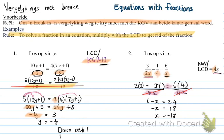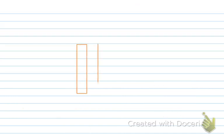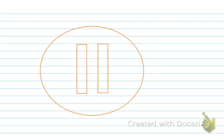That was the explanation for Day 22. Now you have to do Exercise 1 — you can find the numbers of what you have to do on the notes, and the questions are scanned in from your textbook on the notes, so you don't need the textbook. Press pause and do the exercise; after that press play again to mark it.